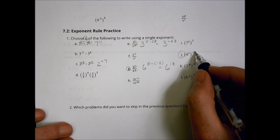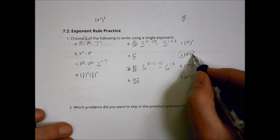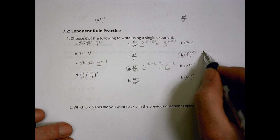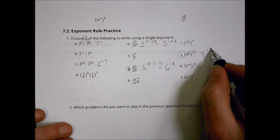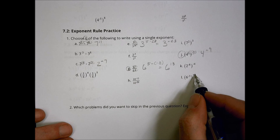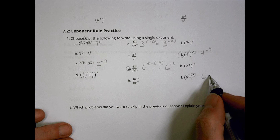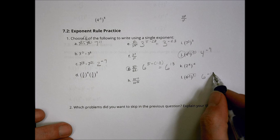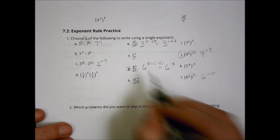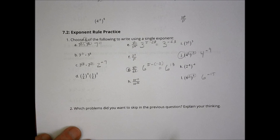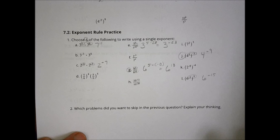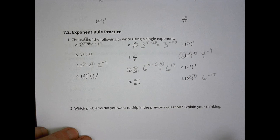We have multiplying those together, so that becomes four to the negative ninth. And we can multiply these together — that becomes six to the negative fifteenth. There are six examples there; you could do the other ones no problem.